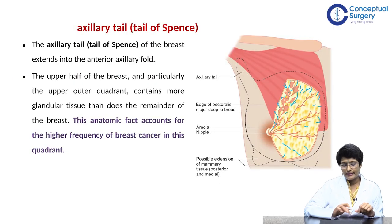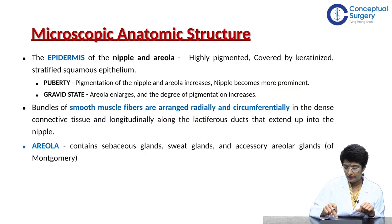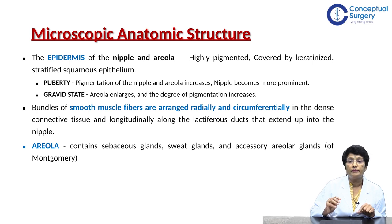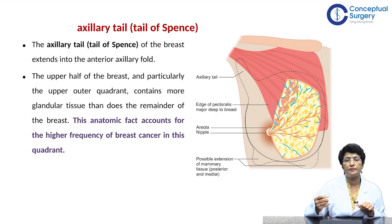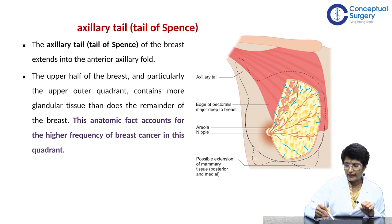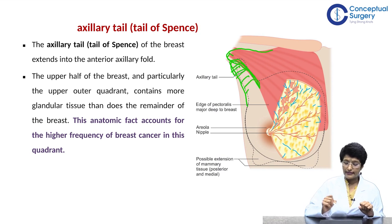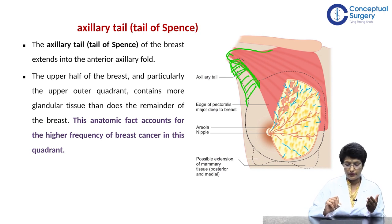There is an extension of the breast into the axillary tail, also known as the axillary tail of Spence, and it extends into the anterior axillary fold. That is essentially the area — that's the axillary tail if you look at it from the front.